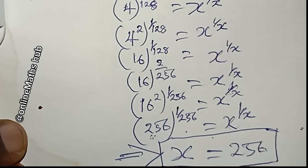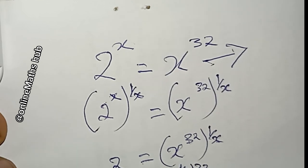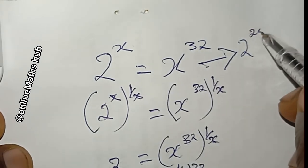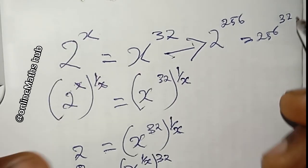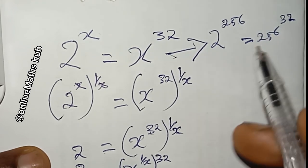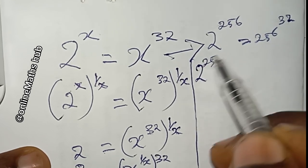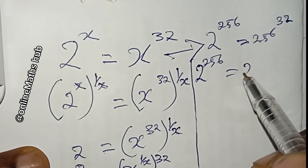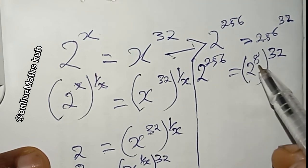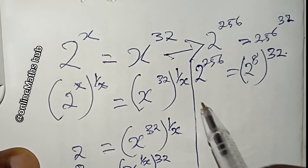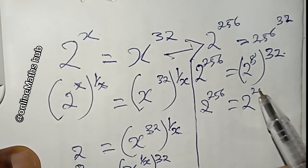Let's do a quick check. Substituting x equals 256: left hand side is 2 to the power 256, and right hand side is 256 to the power 32. Writing 256 as 2 to the power 8, the right hand side becomes 2 to the power 8 times 32, which is 2 to the power 256. Both sides are equal, confirming x equals 256 satisfies the equation.